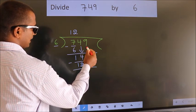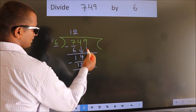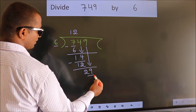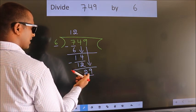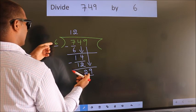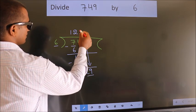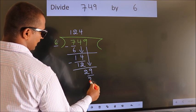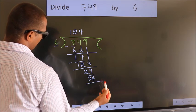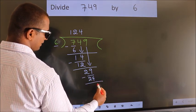After this, bring down the beside number. So 9 down. So 29. A number close to 29 in 6 table is 6 fours, 24. Now we subtract. We get 5.